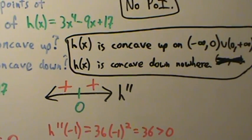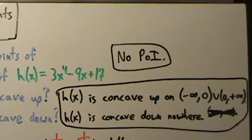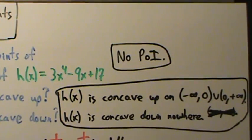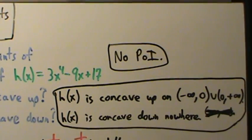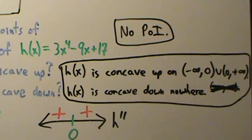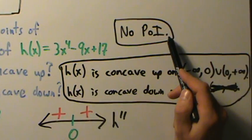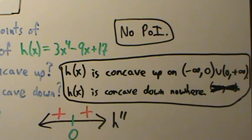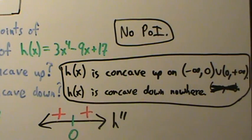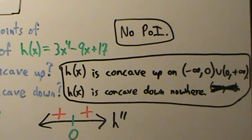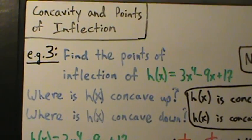So that's example three with concavity and points of inflection — an example where we saw there were no points of inflection. As mentioned in the last video, that can happen. You might have one point of inflection, no points of inflection, or more than one. Anything is possible — it just depends on the function.